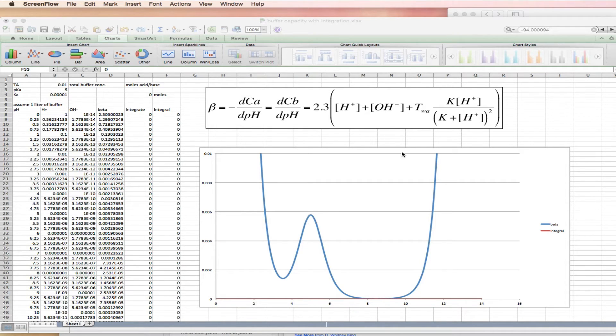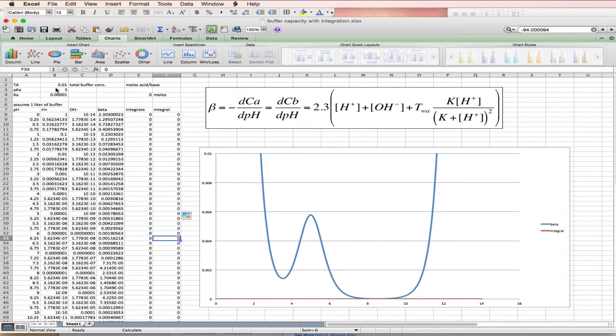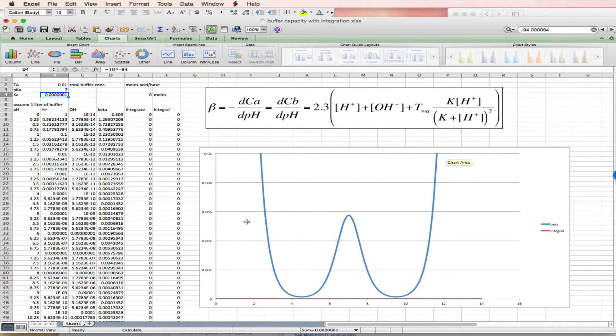The position of this peak is related to the Ka, or the pKa. So if I make the pKa 7, you notice this peak moves to the middle of my pH scale.